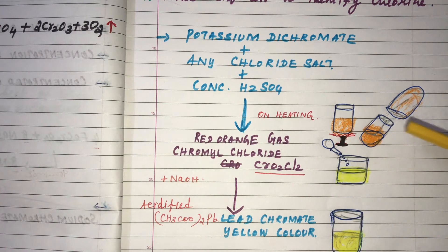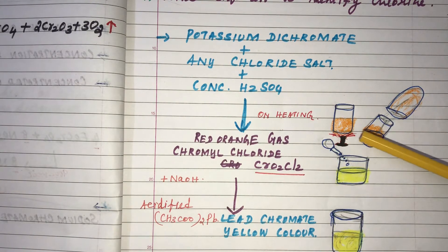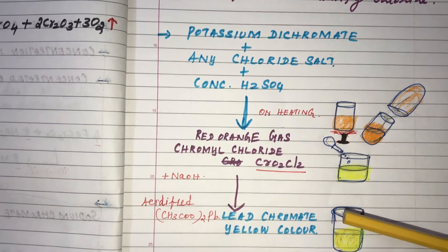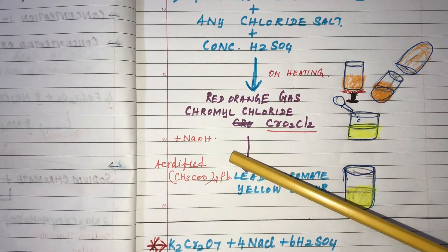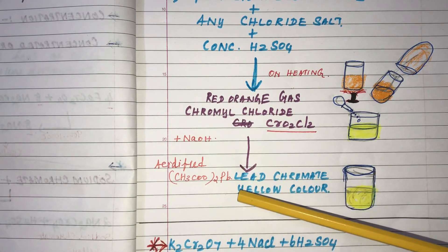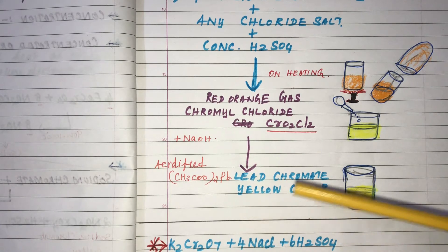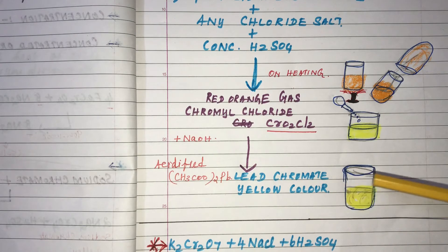The evolving vapours are collected in another test tube by keeping it in a slanting position. The red-orange vapours of Chromyl Chloride collected in the test tube are then treated by adding Sodium Hydroxide and acidified Lead Acetate. By the addition of Sodium Hydroxide and acidified Lead Acetate, the mixture forms a yellow-coloured Lead Chromate.